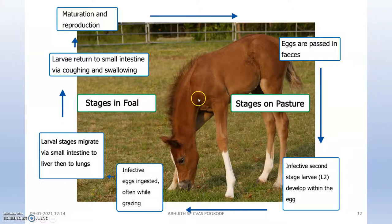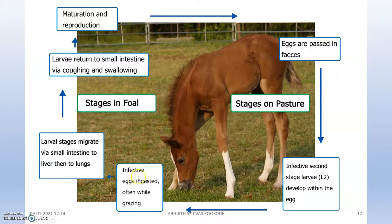This shows the stages in foals. Eggs are passed in the feces; infective second-stage larvae develop within the egg. While grazing, foals ingest infective eggs. The larval stages migrate via the small intestine to the liver and then to the lungs. Larvae then return to the small intestine via the trachea and swallowing, where they mature and produce eggs.